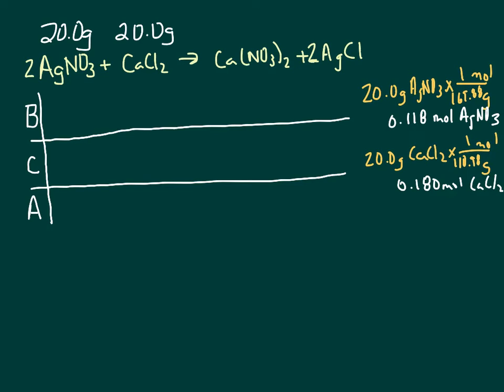So I did that work over here on the side, changing the 20 grams of silver nitrate into moles using the molar mass 169.88, and I got 0.118 moles of silver nitrate. And I did the same for the calcium chloride using the molar mass 110.98, 0.180 moles of calcium chloride.